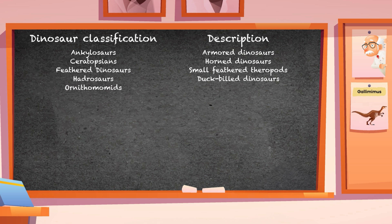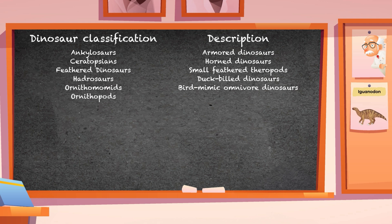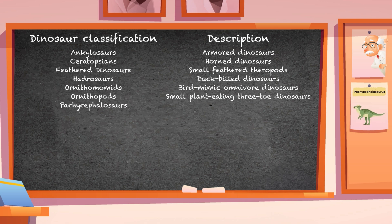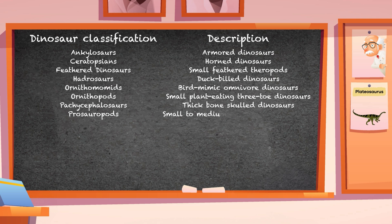Ornithomimids: bird-mimic omnivore dinosaurs. Ornithopods: small plant-eating three-toed dinosaurs. Pachycephalosaurs: thick bone-skulled dinosaurs. Prosauropods: small to medium plant-eating dinosaurs.